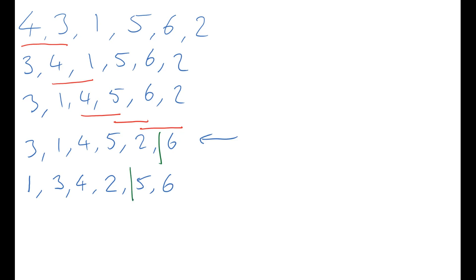Now we're going to ignore the two numbers to the right and we've done our second pass. We're going to do the same process again. I'm going to compare the one and the three — the smaller is the one, I'm going to keep the three in my head. Compare the three with the third number, in this case it's a four. Three is the smaller one. Keeping the four in my head. Now I'm comparing the four with the fourth number — that's a two, that's the smaller of the two. And I've reached the end of this sub-list. So there's our four, there's a five, there's the six.